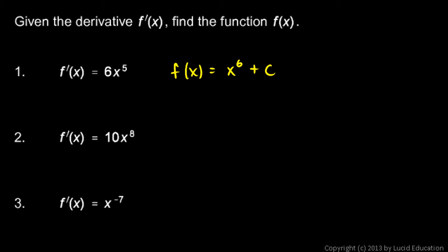Number 2, f-primed is 10x to the 8th, so f of x is going to be 10x to the 9th over 9 plus c. And check that - taking the derivative, this is a constant, 10 over 9, so that would stay out front. And then we would have 9 times x to the 8th, and that 9 would cancel out the 9 down there, leaving us with 10x to the 8th. So that's good.